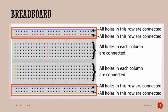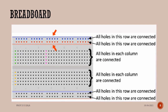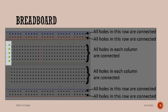The top two rails and bottom two rails are called power rails. The top row of holes are connected together and are marked with the red dot and blue dot. Note that the connection breaks in the middle of the breadboard.